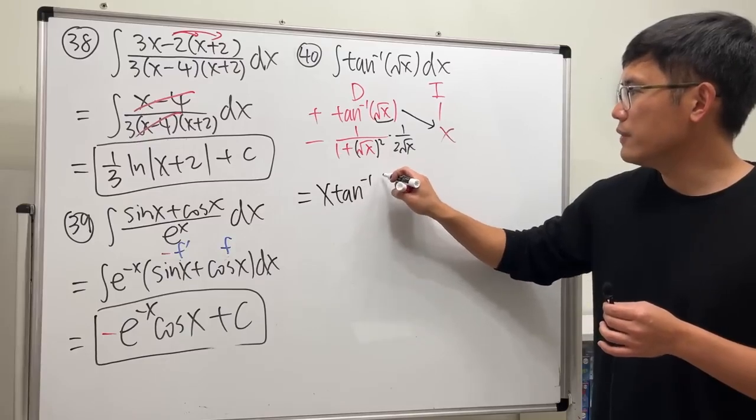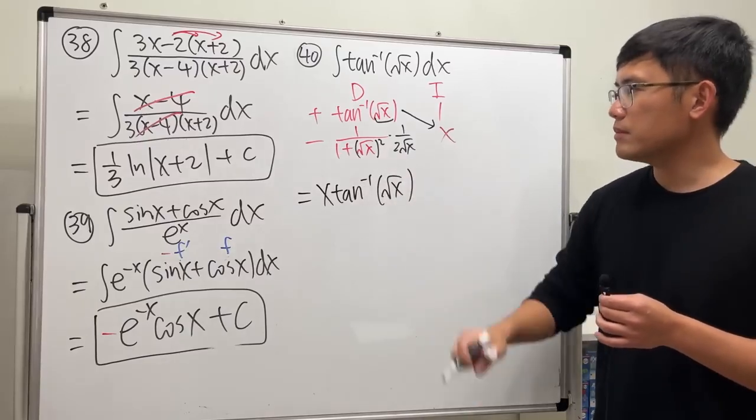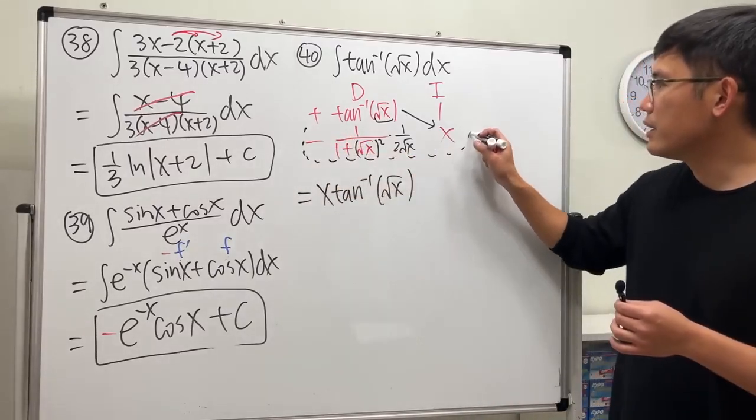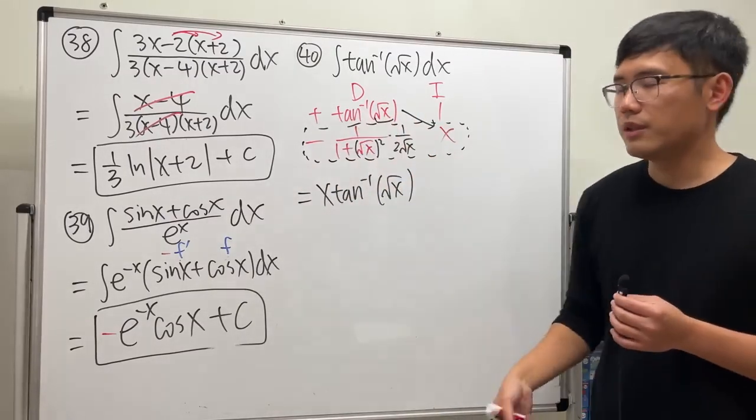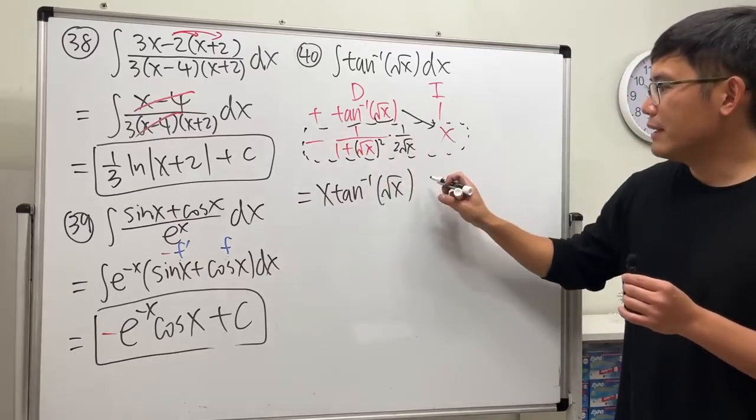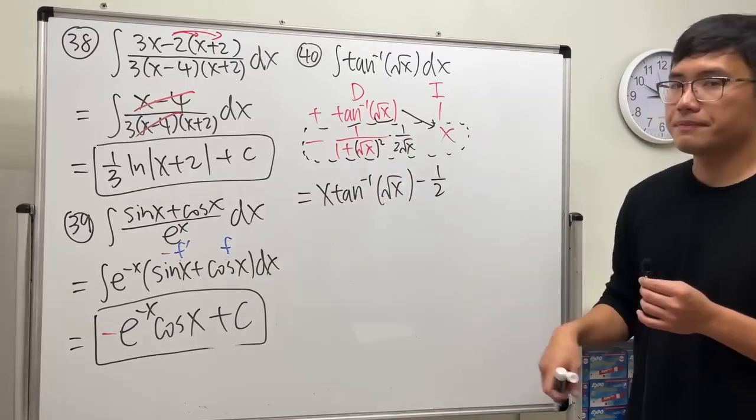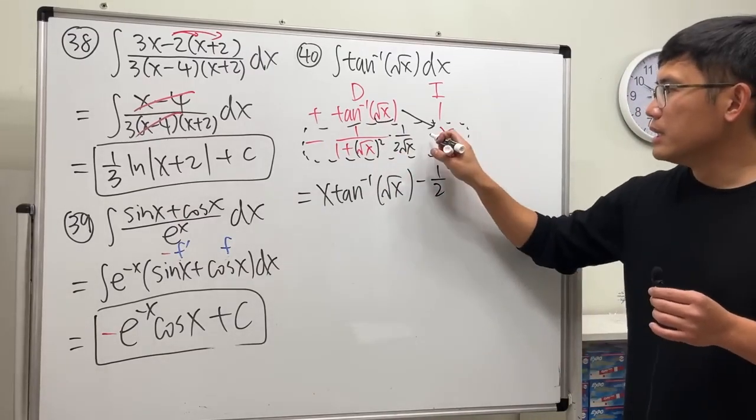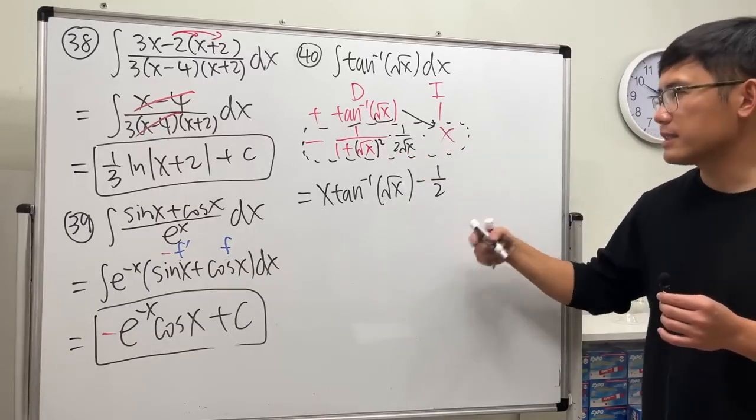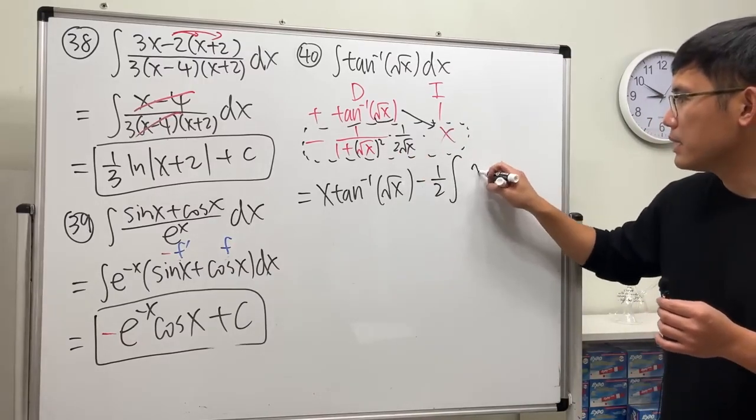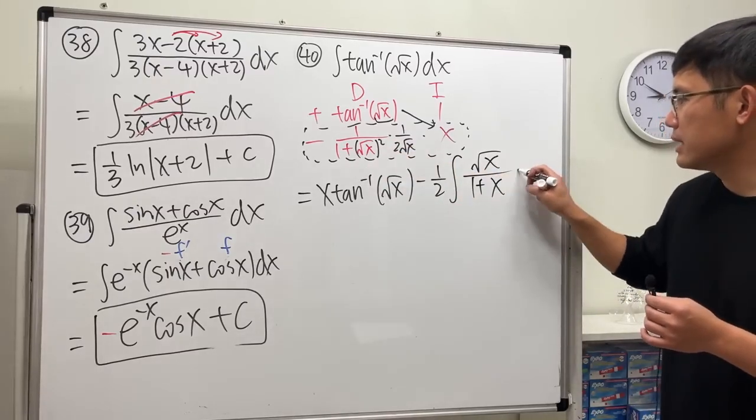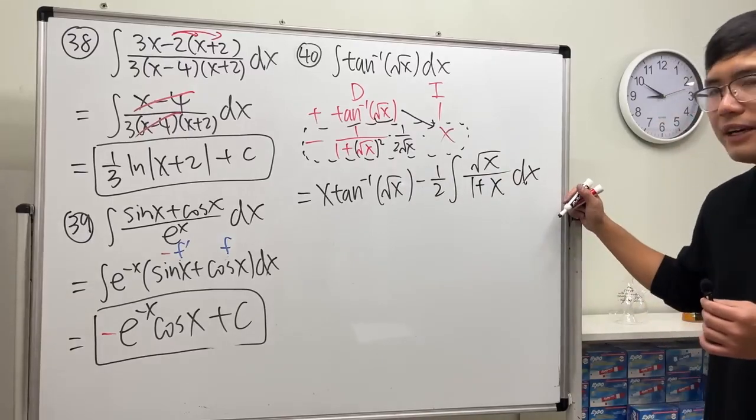Then next we multiply these two things together and the result is still integrated. Still put in the integration minus. We have the one half, so let's put on minus one half. Check this out. This times that, it's just square root of x, so we have square root of x on the top over this, and that cancels. So one plus x, and then dx. So that's what we have. Now the question is how to integrate this.